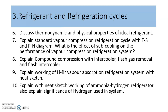Unit 3 is very important because it is a combination of two different topics: refrigerants and refrigeration cycles. The most important question is to discuss the various properties of an ideal refrigerant, including thermodynamic, physical, and chemical properties. You also need to prepare the vapor compression cycle along with the P-H and T-S diagrams, as well as modifications like sub-cooling and the effect of sub-cooling on the performance of vapor compression refrigerant systems.